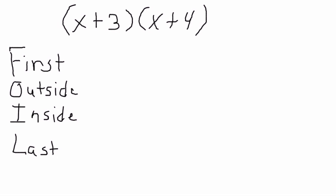Let's begin by using the letter F first. It says that we have to multiply the first terms in each parentheses. The first term in the first parentheses is an x. We multiply with the first one in the other parentheses, which is another x. Therefore, x times x is x squared.